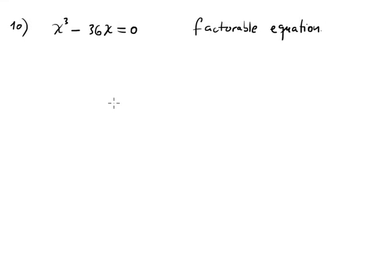Question 10, again we have a factorable equation. In this case, you apply first greatest common factor. The greatest common factor is obvious, x. And inside the parenthesis we have x² minus 36.